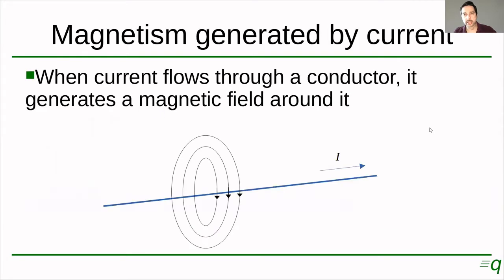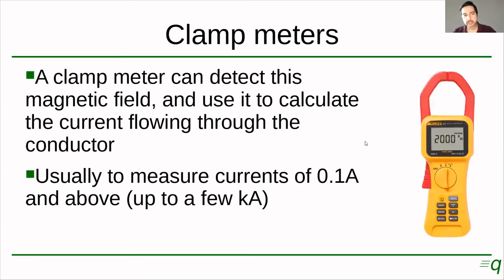So let's start with electricity and magnetism. Magnetism can be generated by current flowing through a wire. In this case we have a wire here and these lines represent the magnetic field that this current creates when it flows. Now we can take advantage of that magnetic field and measure it with a specific device. So if we build an instrument that has a magnetic sensor, and knowing that the magnetic field increases when the current increases through the conductor, we could calculate how much current is flowing through the conductor by measuring the magnetic field.